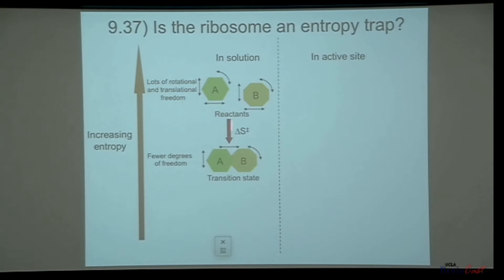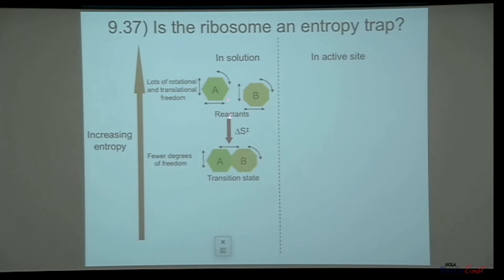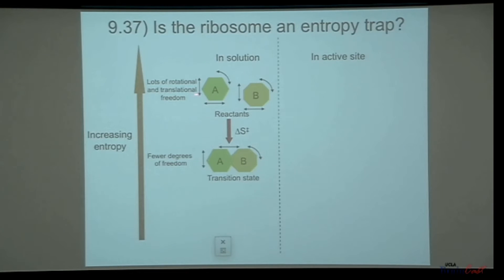You can think of A as the peptidyl tRNA and B as the aminoacyl tRNA. These are the two reactants in peptide bond formation, and this is the uncatalyzed reaction. In the uncatalyzed reaction, the two reactants are free to diffuse about and to tumble around, so they have lots of rotational and translational freedom.